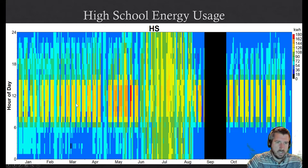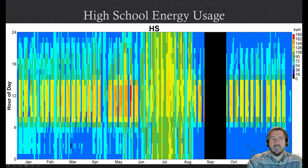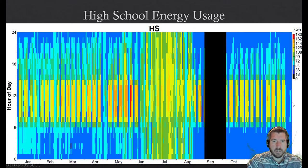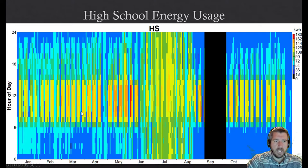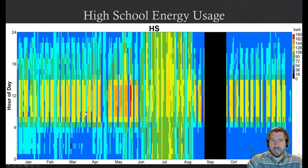If you look at March, those lines happen about four or five times a month — hopefully you figured out these are weekends, because the school is not fully occupied on weekends and uses less energy. Another thing you might notice is that at the end of December and end of April there's a drop in energy — that's probably spring break and winter break. If a school didn't have those energy drops for weekends or breaks, you'd likely notice the lights, heat, and air conditioning are left on the whole time.